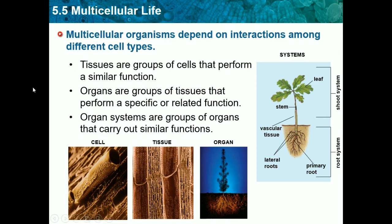Here is an image: this is one cell, and as you can see, multiple cells form the tissue, and then multiple tissues form an organ, which would be the roots. So this is a system — there's a root system and also a shoot system for plants, so that would be the organ system.